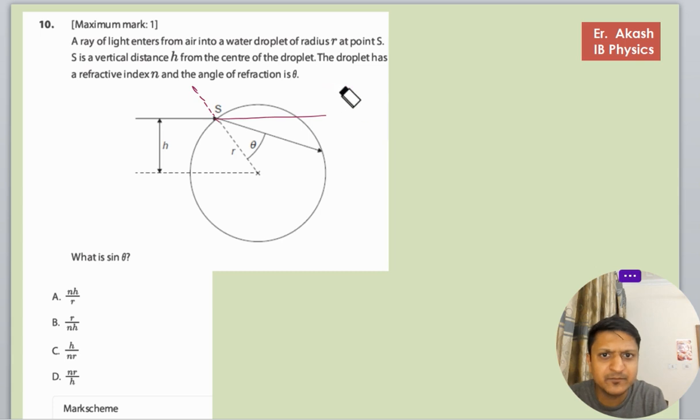Now we will concentrate on the question. We have to find sine theta. Sine theta means this. This is basically r and this is the angle of incidence.